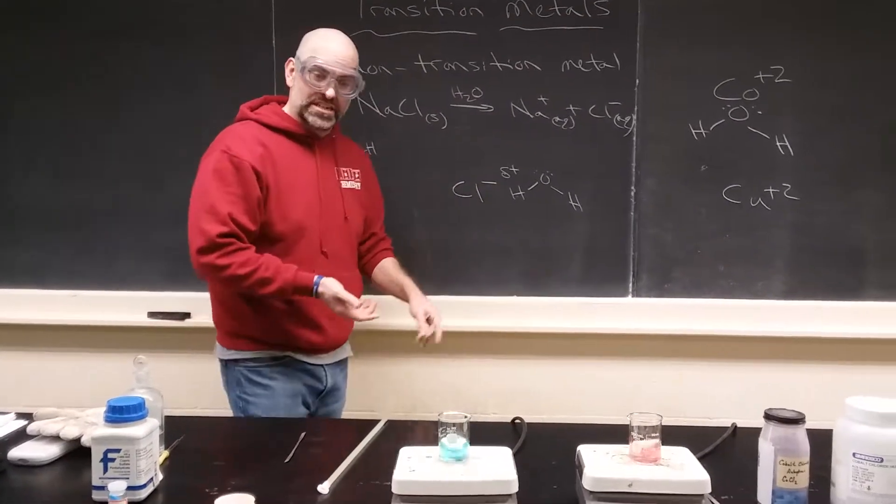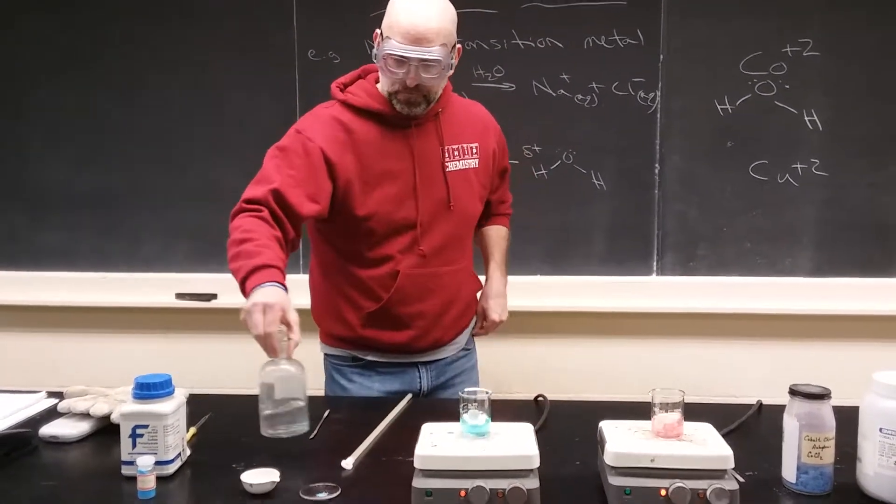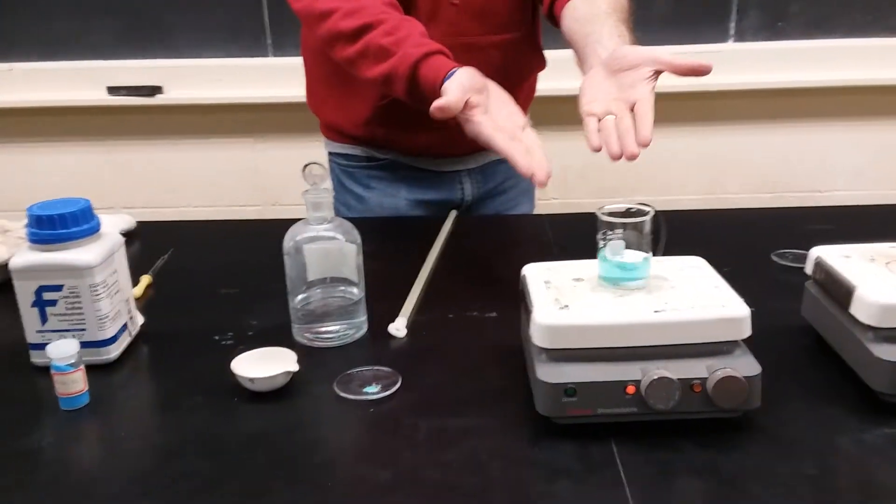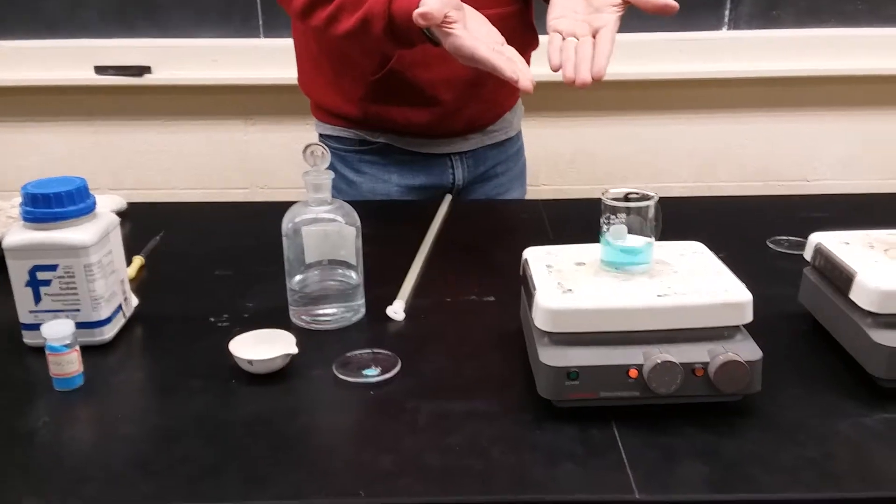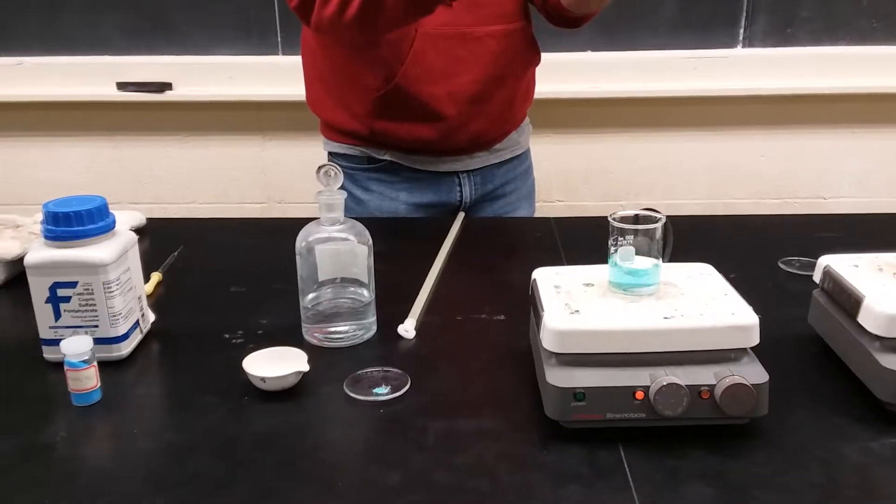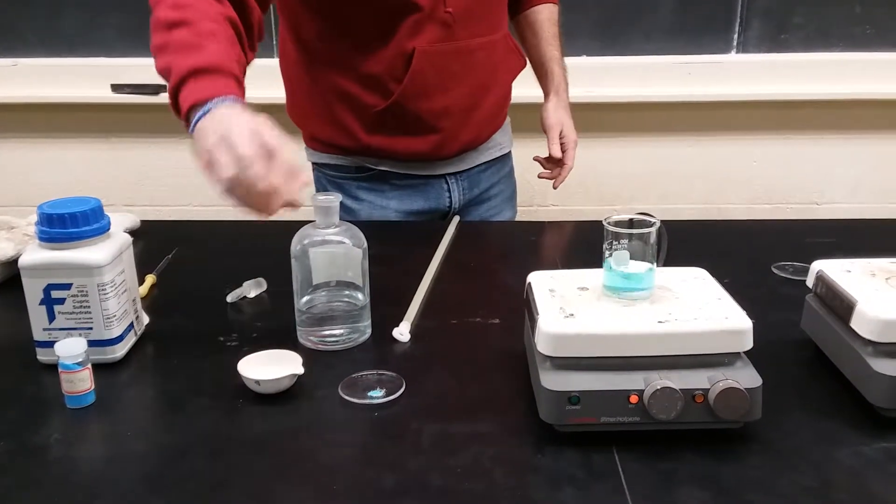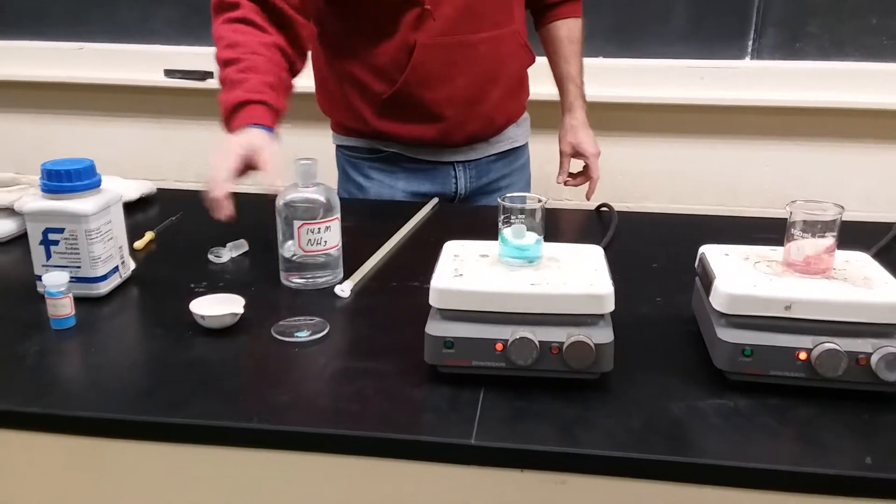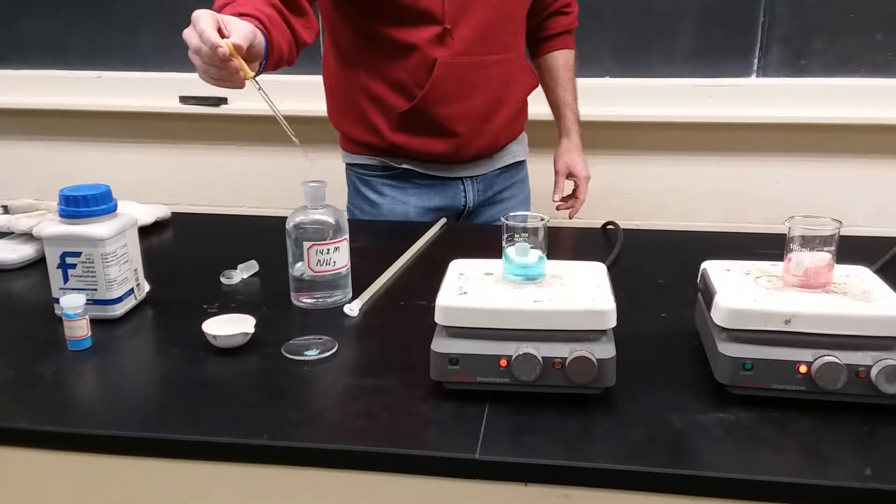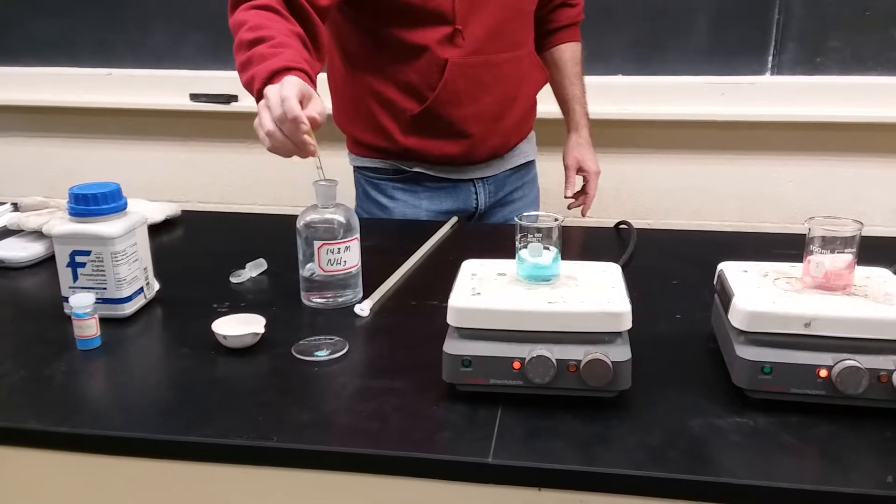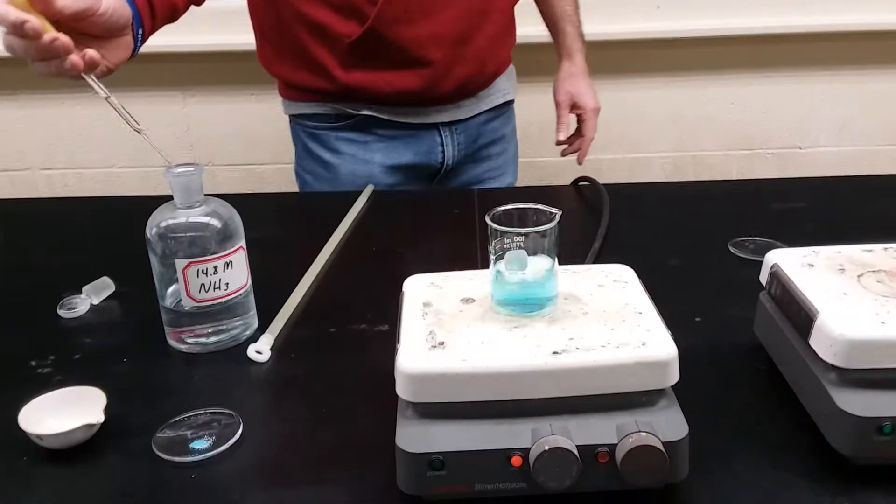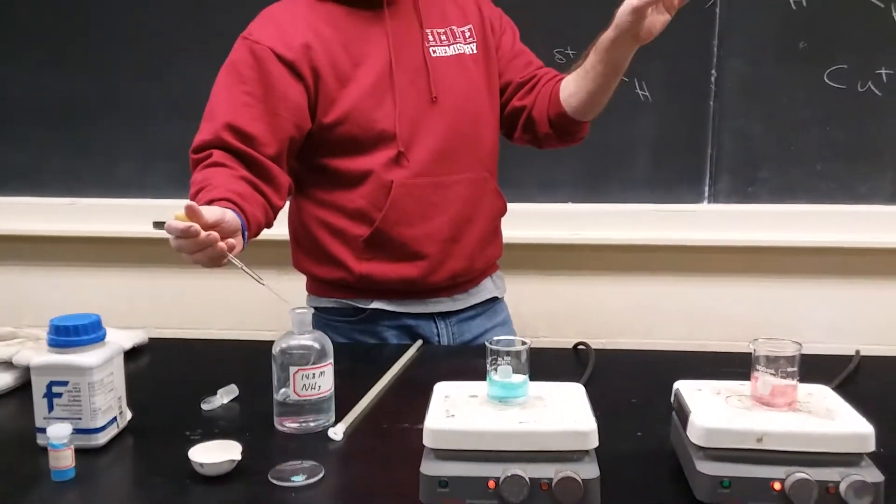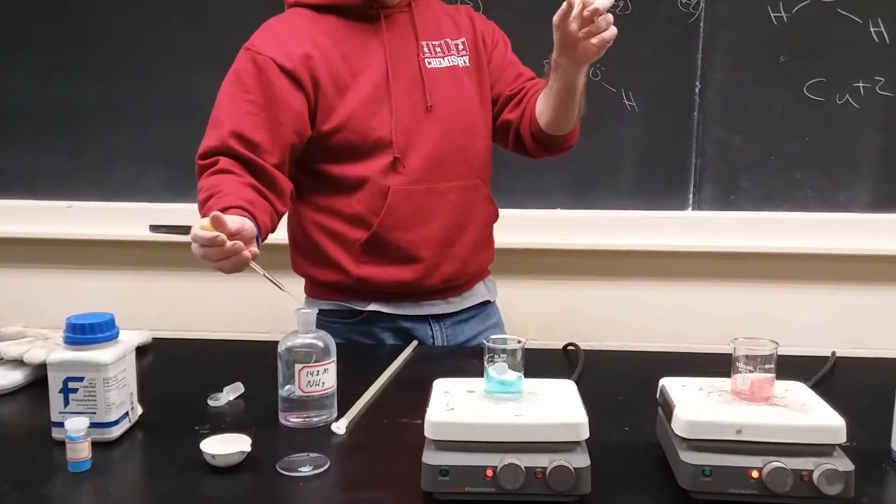The other thing I want to show you in this demo is what happens if we put something other than water in there. Is water the only thing that will essentially grab onto the transition metal? Well, no. I'm going to show you something here. This is concentrated ammonia. So I'm going to take some concentrated ammonia and add it to this. And there's competition now. We have NH3, that's ammonia, and H2O, both of which will grab onto the transition metal. And they compete.